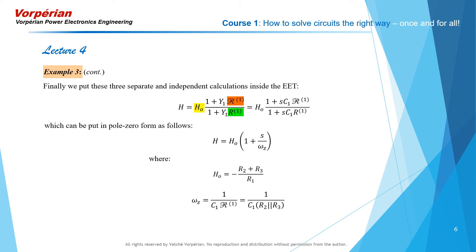And here's the expression of your transfer function, in which H0 is the ideal non-inverting gain, and the zero is given by 1 over C1 times the parallel combination of R2 parallel R3.